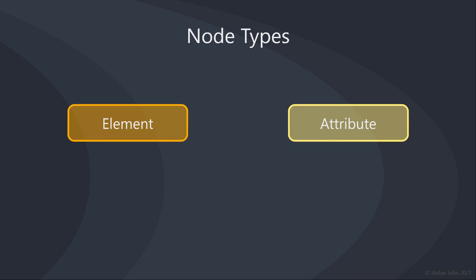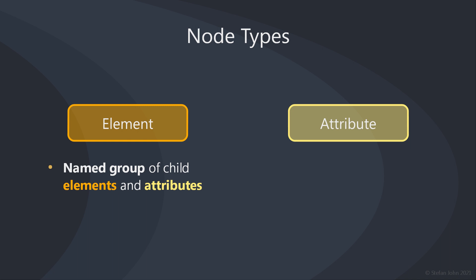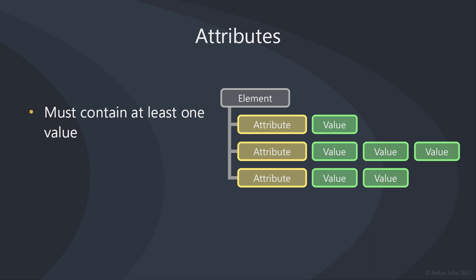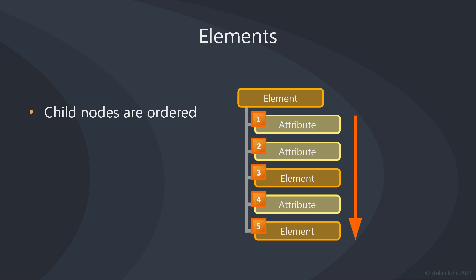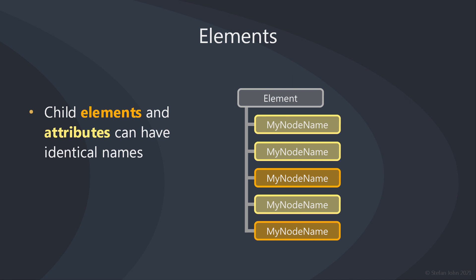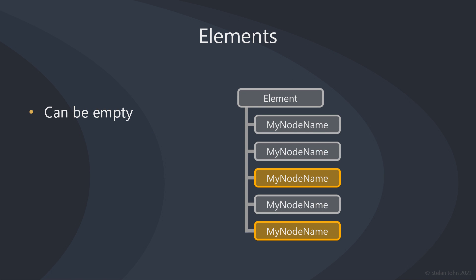An element is therefore a named group of child elements and attributes. An attribute, on the other hand, is a named array of string values. Attributes must contain at least one value, and string values can be empty or null. The child nodes of an element are ordered, and both child elements and attributes can have identical names. An element can also be empty, without any child nodes.